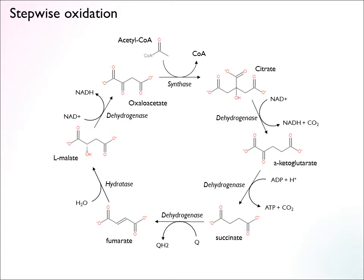Let's look at the oxidation of acetyl units in more detail in the TCA cycle. In this mode of operation, we have an acetyl unit in the form of acetyl-CoA that enters the cycle, being condensed with oxaloacetate to form citrate, which is a six-carbon compound.